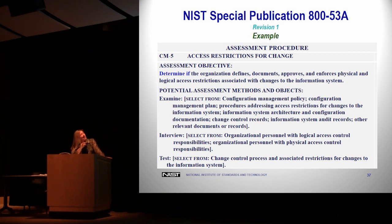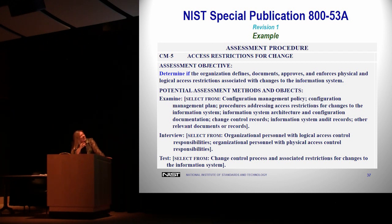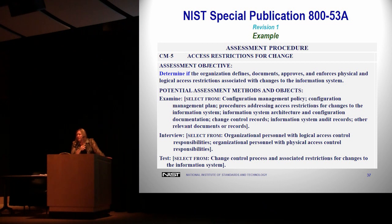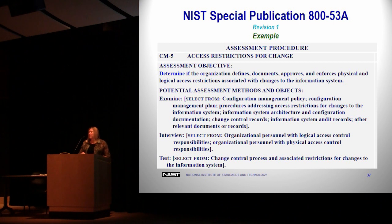Here's what assessment procedures look like in SP 800-53A. For control CM-5, Access Restrictions for Change, the assessment objective is to determine if the organization does what CM-5 requires. It provides potential assessment methods and objects: what to examine, who to interview, and what to test. The guidance is high-level but gives assessors a starting point. Each determination statement in the objective — such as 'determine if the organization defines, documents, approves, and enforces' — requires the assessor to answer yes or no for each component.